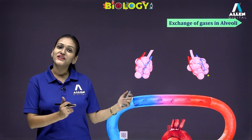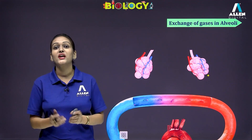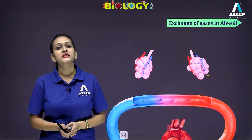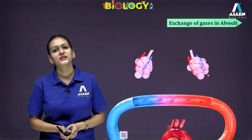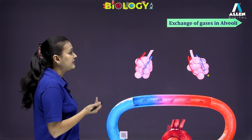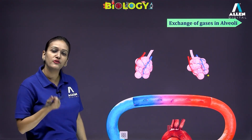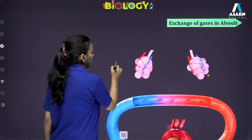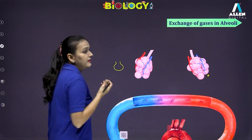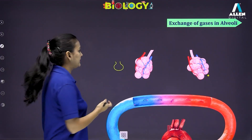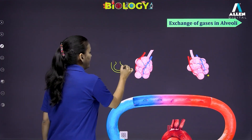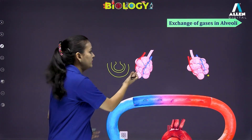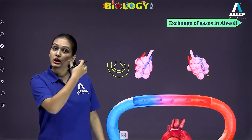As we study respiration in human beings, we know it occurs in the presence of oxygen. We have studied the structure of lungs, which are made up of tiny sac-like structures called alveoli. These alveoli have a very rich blood supply with an entire capillary network surrounding them, through which blood is running.